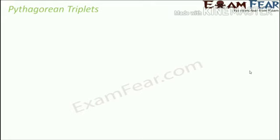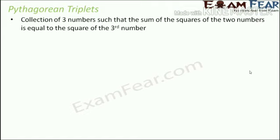We are going to talk about another interesting concept: Pythagorean triplets. You may know about the Pythagoras theorem. This concept has a very close relationship with it, which is why it is named this way. A triplet means a set of three numbers. So a Pythagorean triplet is a collection of three numbers such that the sum of the squares of two numbers is equal to the square of the third number.